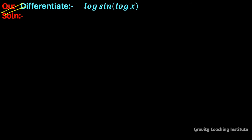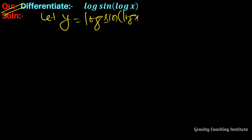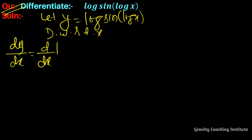Differentiate log(sin(log x)). Let y equal to log(sin(log x)). Differentiate with respect to x. dy/dx equals: applying the chain rule, the derivative of the outer log gives 1 over sin(log x), using the log differentiation formula.